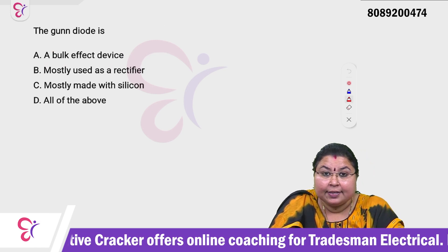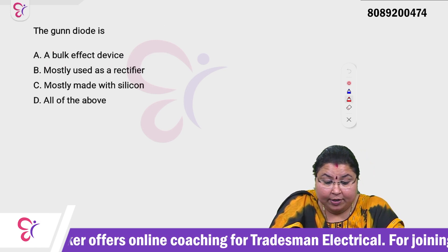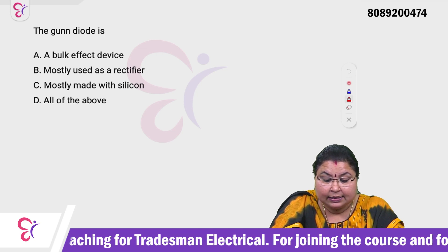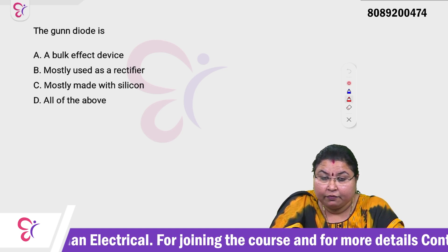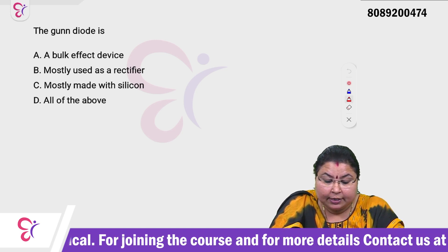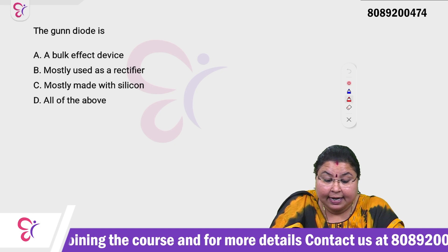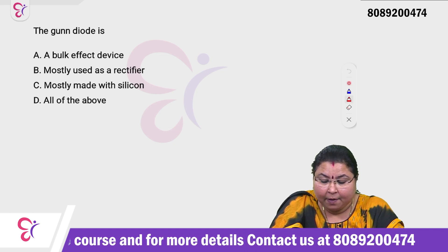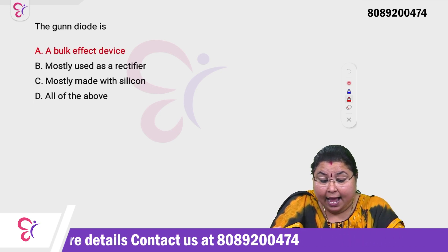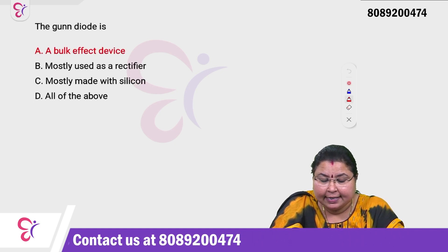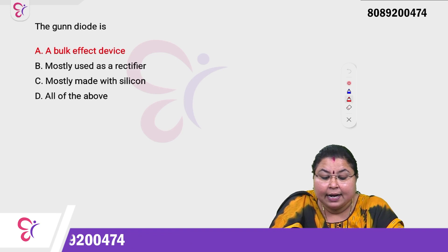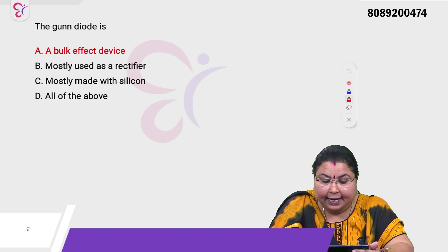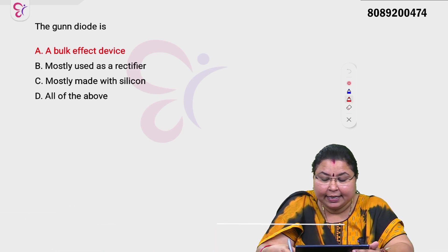The Gunn diode is: Option A a bulk effect device, Option B mostly used as a rectifier, Option C mostly made with silicon, Option D all of the above. The Gunn diode is a bulk effect device — Option A is the correct answer.